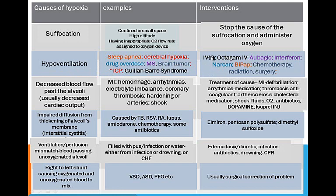Interventions: IVIG or Octogam for Guillain-Barré, interferon for MS, Narcan if it's a narcotic for drug overdose, BiPAP for sleep apnea, and for a brain tumor — chemotherapy, radiation, or surgery would be your intervention.